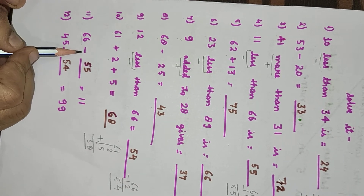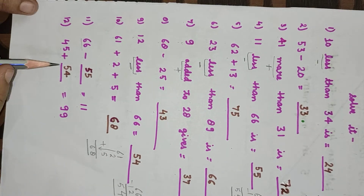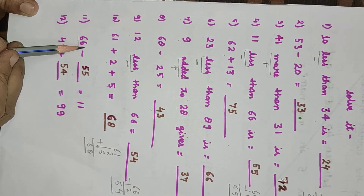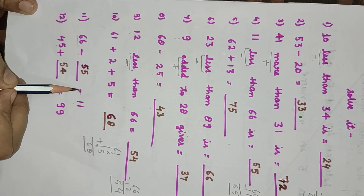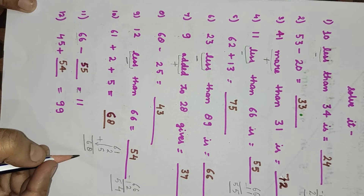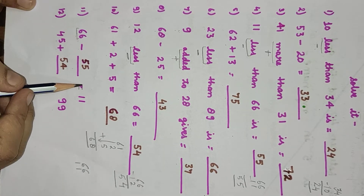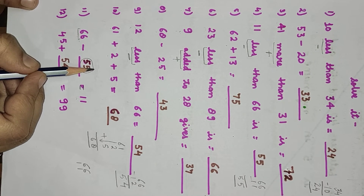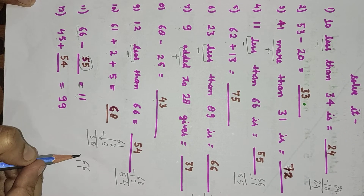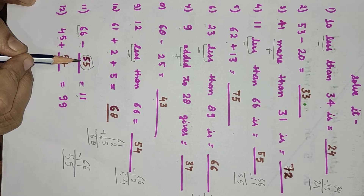Now here is: 66 minus dash equals 11. In this question we don't know what to subtract from 66 to get 11. We will take the digit after the equal sign and subtract the smallest from the greatest digit. So 66 minus 11: 6 minus 1 will be 5 and 6 minus 1 will be 5. The answer will be 55.